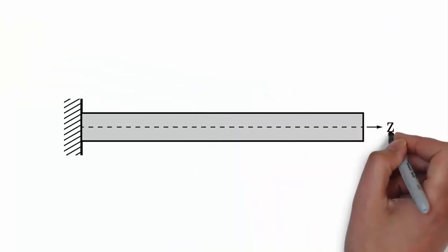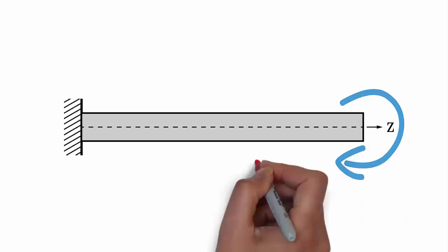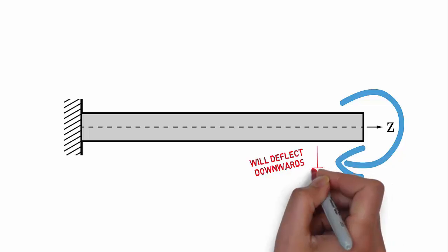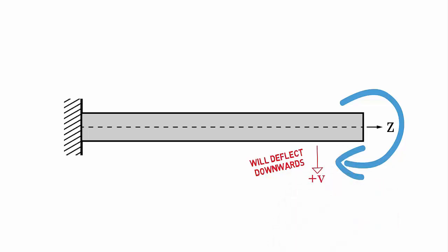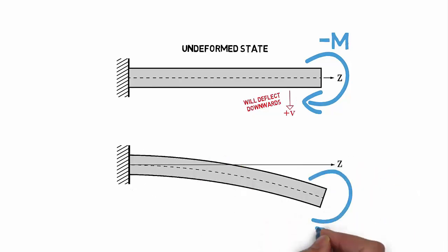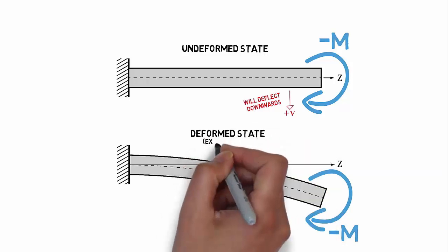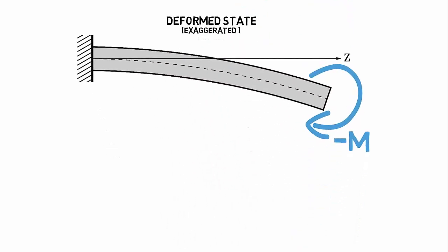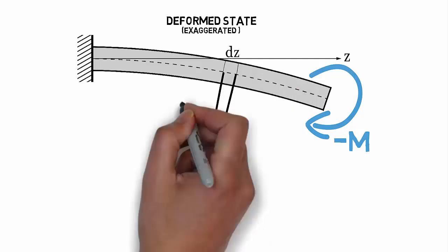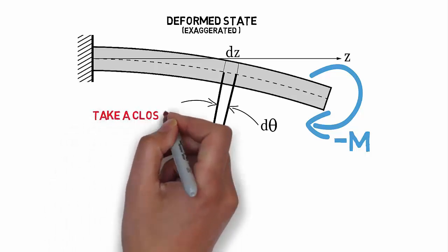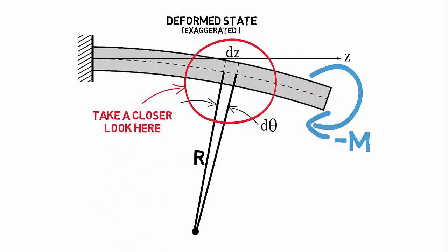Consider a simple cantilever beam subjected to a moment at its free end. The direction of this moment is such that it will cause the beam to deflect in a positive downwards direction when loaded. We will label this moment negative M, as such a moment would be negative according to our sign convention for moments. The beam as drawn is in its undeformed state. In order to develop a relationship for the deformation, we will redraw this beam in an exaggerated deformed state. If we look at a segment of this deformed beam of width dz, we see that the segment will have a local radius of curvature r that will sweep through an angle dθ.